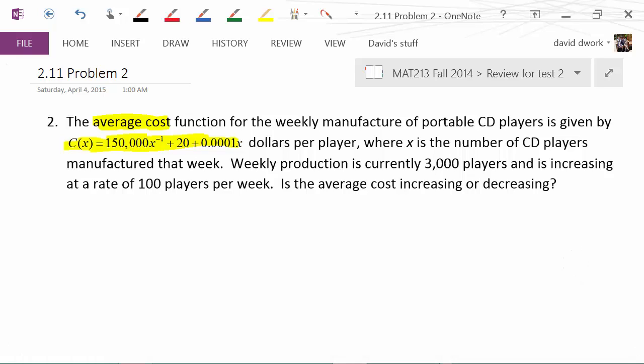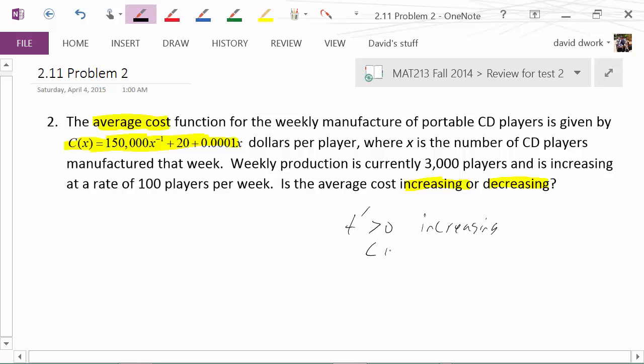To find what the average cost is doing, we can take the derivative because that will speak to the concept of increasing or decreasing. If the first derivative is greater than zero, it's positive and increasing. And if the derivative is less than zero, then it is decreasing.